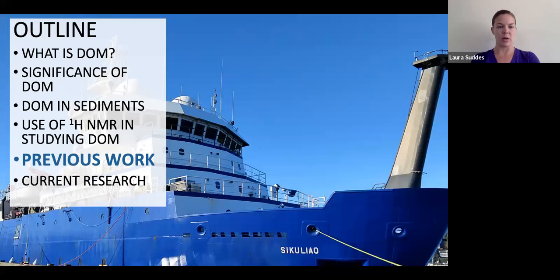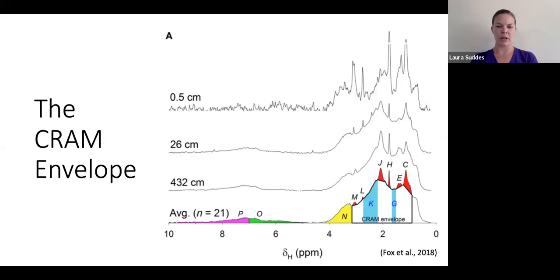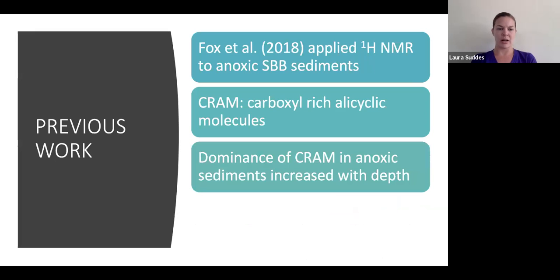Before I present my own results, I want to contextualize them by discussing data from some previous research. In 2018, Fox et al. applied proton NMR to anoxic sediments in Santa Barbara Basin and found that marine sediments were a major source of DOM that's compositionally unique from DOM generated in the upper ocean. They were specifically interested in carboxyl-rich alicyclic molecules, or CRAM. Protons indicating CRAM present as well-resolved peaks on top of a broader envelope. CRAM is thought to represent especially refractory components of marine DOM, and it dominated the proton NMR signal in these anoxic sediments, with its strong presence increasing with depth.